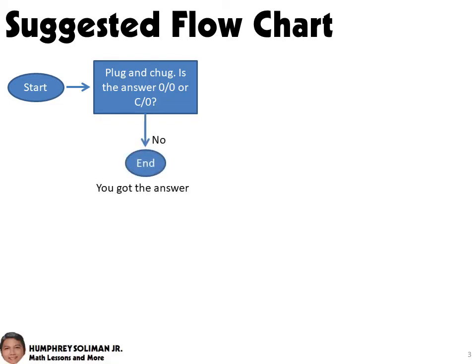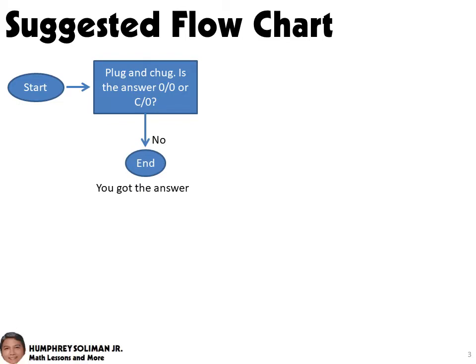But if the result is a constant over 0, or a 0 over 0, we need to take another option to solve for the limit.